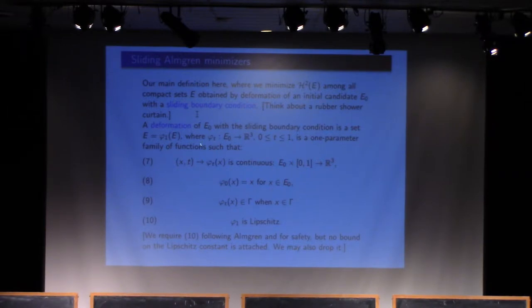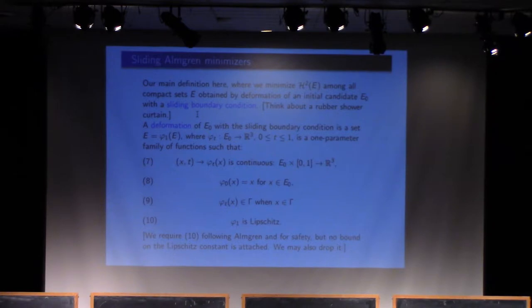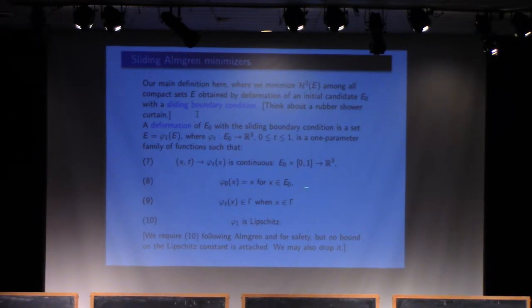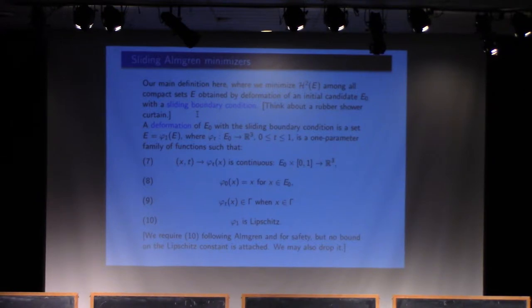You have this one-parameter family of mappings phi_t, defined on the initial set and mapping into R³. Everyone is continuous — the mapping is continuous both in x, and the one-parameter family is always continuous. You start with the identity. The main condition is: when some point of the set is on the boundary, it stays on the boundary. It can move along the boundary, but you're not allowed to pull it out from the boundary.